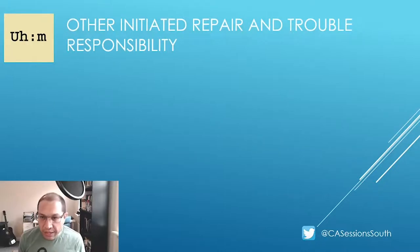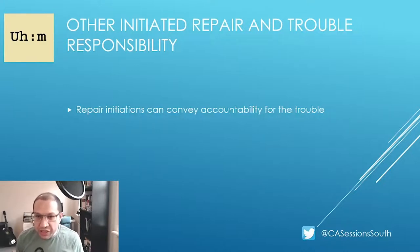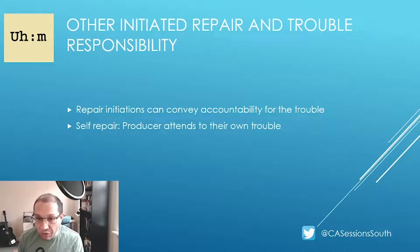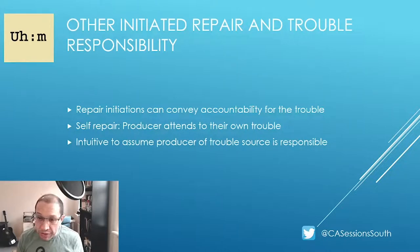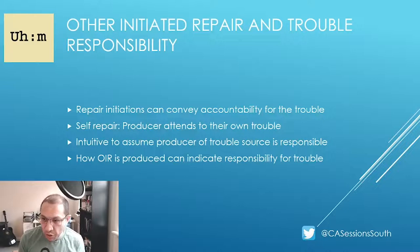Looking more closely at other-initiated repairs, it's evident that other-initiated repair can do more than flag a trouble source. These initiations can convey accountability or responsibility for the trouble. In the case of self-repair, the producer of the trouble attends to it and offers a conversational course correction. It would be intuitive to assume that the producer of the trouble source is typically held responsible, but this is not always the case. What has been found is that the way an other-initiated repair is produced and how it's responded to can convey responsibility for the trouble source.